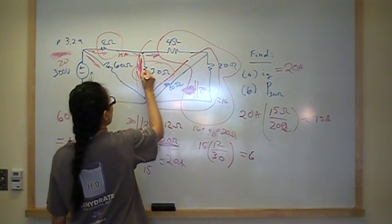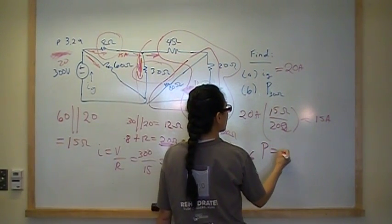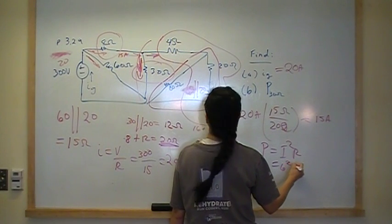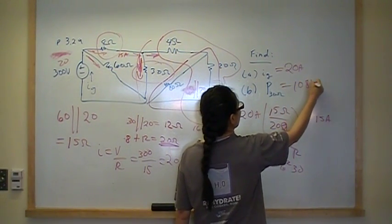So we've got 6 amps going through the 30 ohms, and we know that power is equal to I squared R. Therefore, 6 squared times 30 should give you 1080 watts.